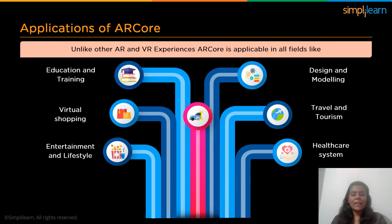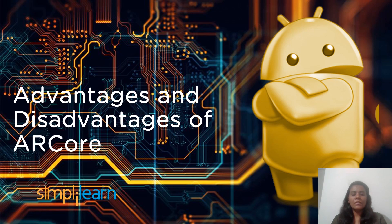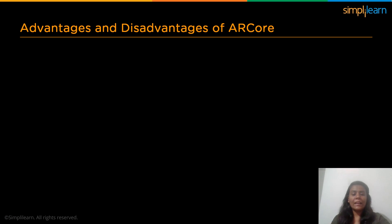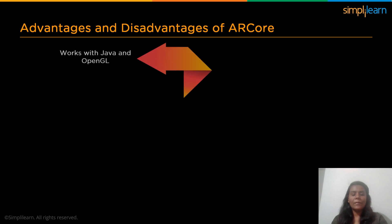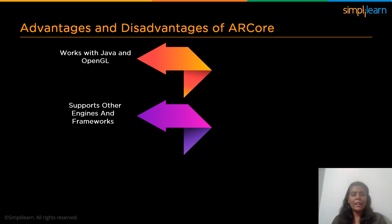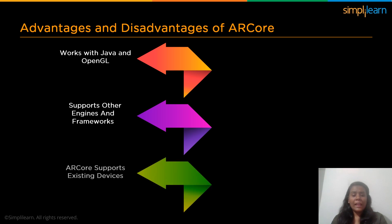So far we have discussed AR Core, its fundamentals, and its applications. Now let's discuss the advantages and disadvantages of Google AR Core. AR Core is simple and works with common programming languages like Java and OpenGL. It supports other development engines and frameworks like Unreal and Unity, which helps developers to build AR apps irrespective of the platform they work on. AR Core needs no specific prerequisites — it can be applied even on existing devices, which eliminates the need to create new apps for a particular device. And mainly, AR Core is freeware and needs no licensing or payments.